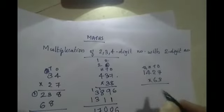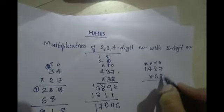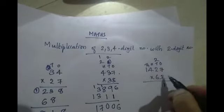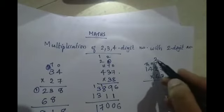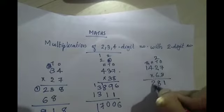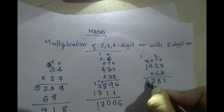Next you are going to do multiplication with 4 digit number with 2 digit number. 7 into 3 is 21, 2 is carried over. 3 into 2 is 6, 6 plus 2 is 8. 3 into 4 is 12, write 2, 1 is carried over. 3 into 1 is 3, plus 1, 4.